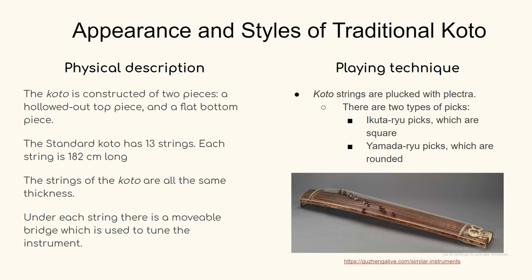To play the koto, you pluck with your right hand using plectras. There are two types: the first is the kuta, a square pick used by beginners because it makes more contact with the string and produces a fuller sound more easily. The second type is the yamada, a rounded pluck shaped like a fingernail, used by more advanced players because it has less friction on the string and allows faster movements. Each pluck is typically strapped or wrapped around the thumb and index finger with tape or another form of wrapping.